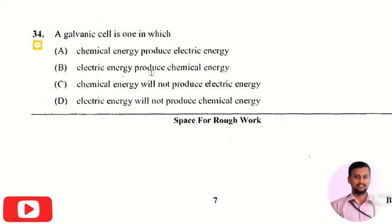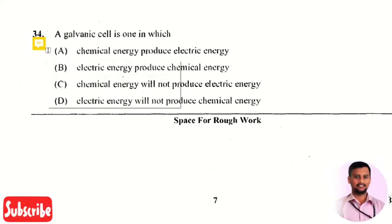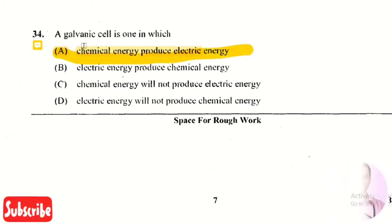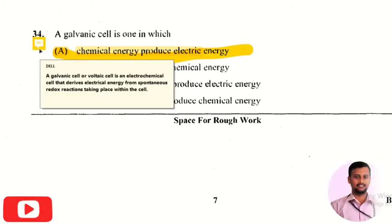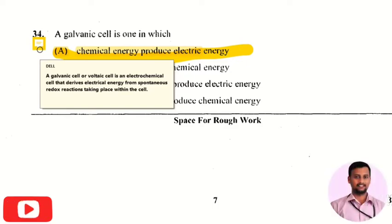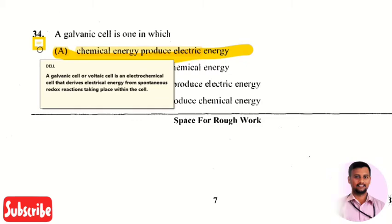The next question is: a galvanic cell is one in which — the right answer is option 1, chemical energy is converted into electrical energy. A galvanic cell or voltaic cell is an electrochemical cell that produces electrical energy from spontaneous redox reactions taking place within the cell.